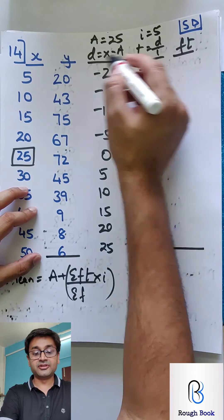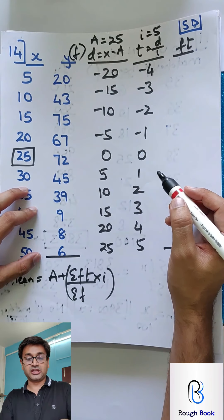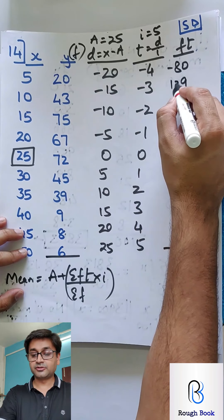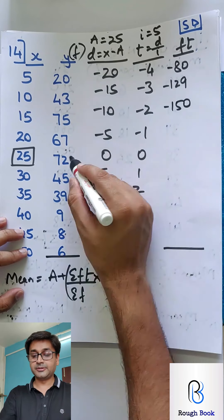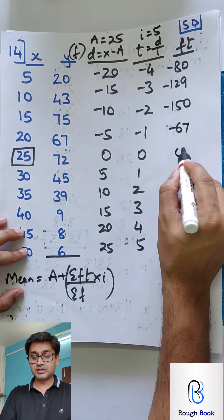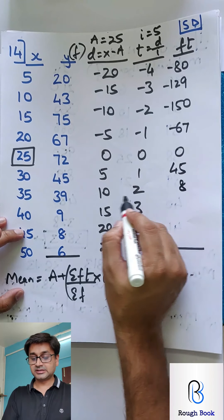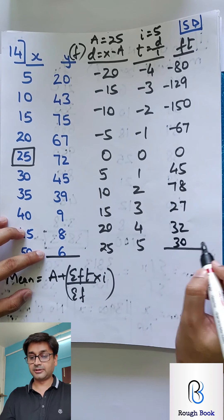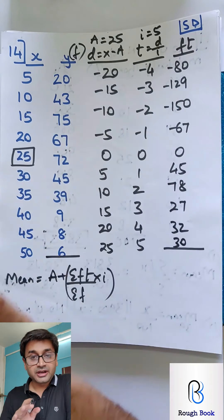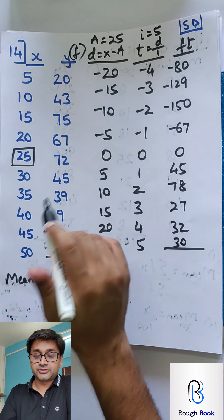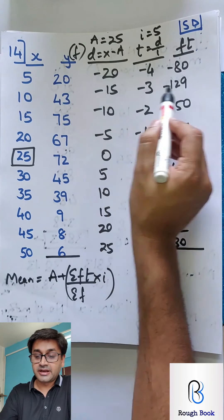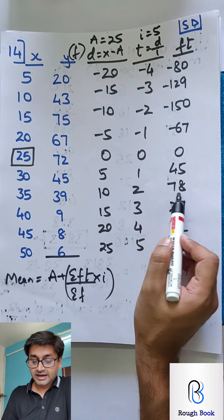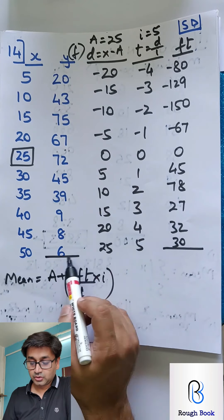The formula for mean under step deviation is: mean equals A plus (summation FT divided by summation F) multiplied by i. You subtracted A so you add A; you divided by i so you multiply i. So first multiply by i, then add A. Multiplying F with T column: I get minus 80, then negative values of 129, 150, 67, then 0, then positive values of 45, 78, 27, 32, 30. Let me recheck all calculations.